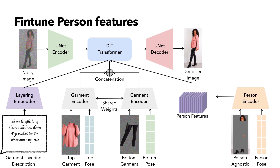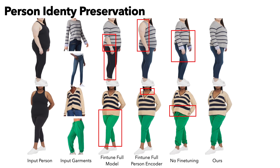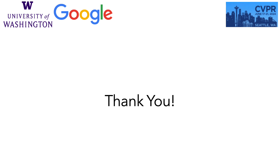Then for the fine-tuning stage, we only need to fine-tune the person features instead of the full model. We first get the initialization of person features by running through the person encoder. Then we freeze all learnable components and only optimize the person features on the fine-tuning dataset. This fine-tuning strategy can reduce the fine-tune model size from 4GB to 6MB, as now we only need to store the person features instead of the full model for each subject. Furthermore, since we freeze most parts of our system, the underlying distributions learned during training are not destroyed by the fine-tuning. I provide some qualitative results for the person identity preservation. Our method can better preserve person's pose and body shape compared to the non-fine-tuning version, and we don't overfit to the garment worn by the target subject compared to the fine-tuning full model and person encoder version. Here's another example on men. Thanks for your interest. Please refer to our paper and project website for more details.